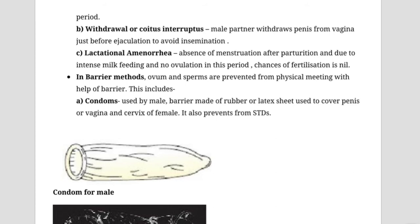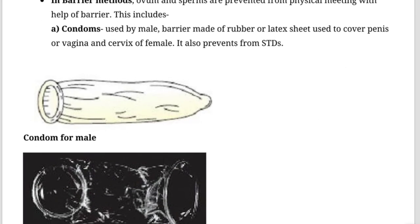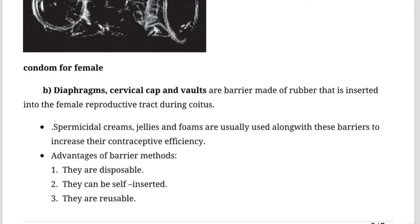Other methods available are barriers. Barriers act as a physical layer between the vagina and penis. The condom is available for both males and females, but the male condom is most popular. Other barrier devices like diaphragm, cervical cap, and vault are also used in female reproductive processes.